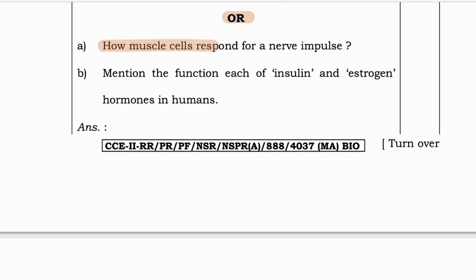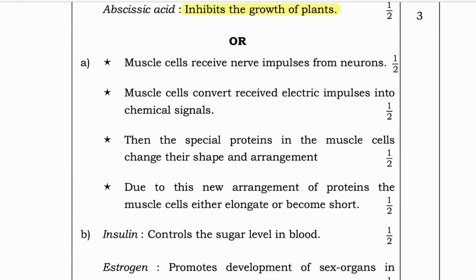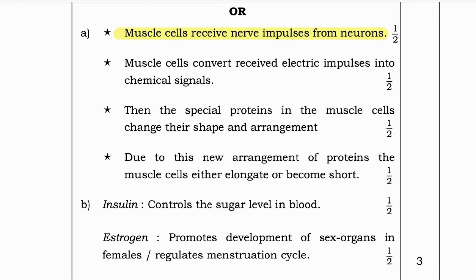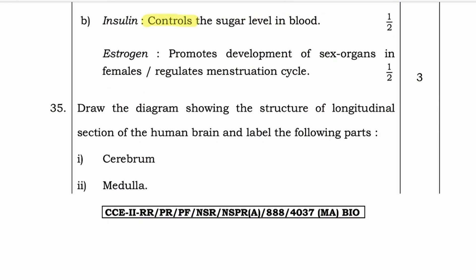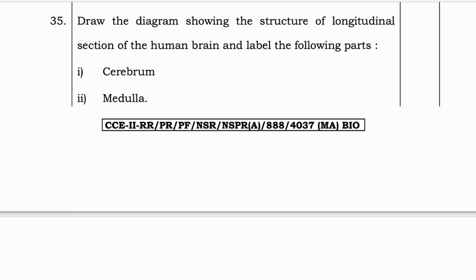Optional question: How do muscle cells respond to a nerve impulse? Mention the function of insulin and estrogen hormones. Muscle cells receive nerve impulses from neurons and convert them into chemical signals. The special proteins in the muscle cells change their shape and arrangement, causing muscle cells to either elongate or shorten. Insulin controls the sugar level in blood; estrogen promotes the development of sex organs in females and regulates the menstruation cycle.